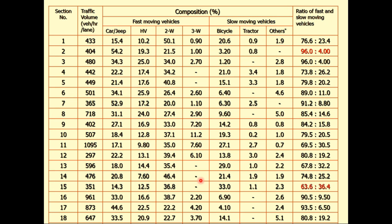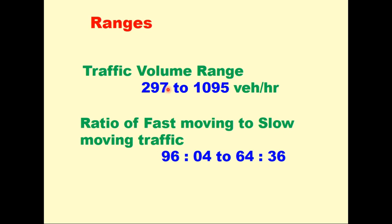This table shows you the traffic composition of fast moving vehicles and slow moving vehicles, and what is the ratio of fast and slow moving vehicles on all the 19 sections which we selected for this study. You can see that the traffic volume ranges from 297 to 1095 vehicles per hour, and ratio of fast moving vehicle to slow moving vehicle is ranging from 96% to 4% to 64% to 36%. So there is a wide range of traffic volume as well as traffic composition. The idea here is to understand whether there is effect of slow moving vehicles on unimodality or bimodality of speed data.